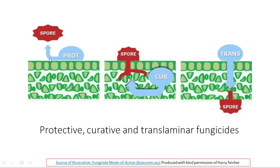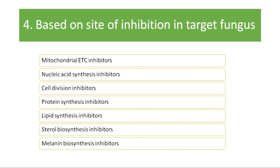Curative fungicides will cure the plant of infection which has already taken place. In the case of translaminar fungicides, if you apply the fungicide on the upper surface and the pathogen or spore is on the lower surface, the translaminar movement will occur and the spore on the other side will be killed. Based on site of inhibition in the target fungus, fungicides can also be grouped as mitochondrial electron transfer chain inhibitors, nucleic acid synthesis inhibitors, cell division inhibitors, protein synthesis inhibitors, and lipid synthesis inhibitors.